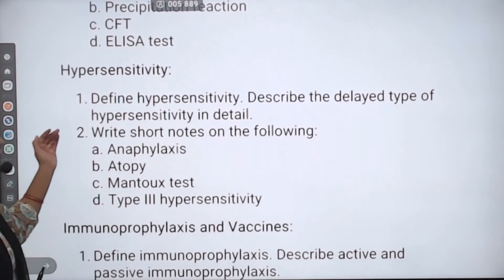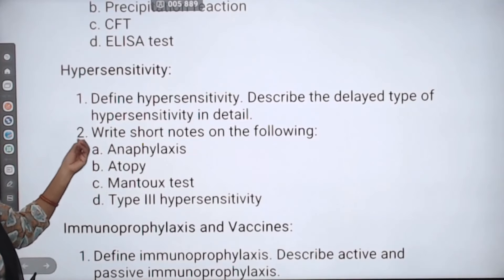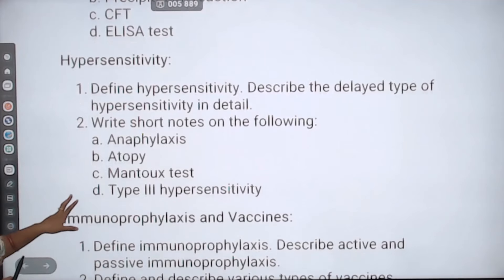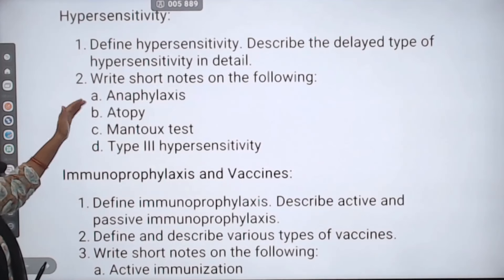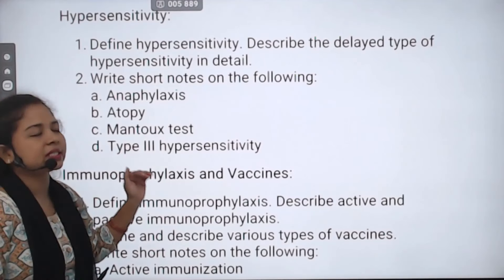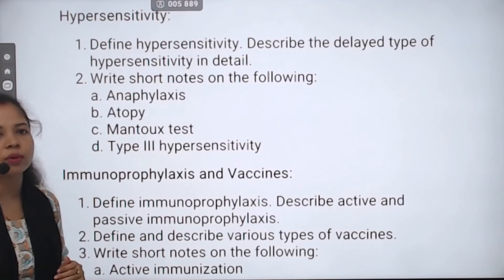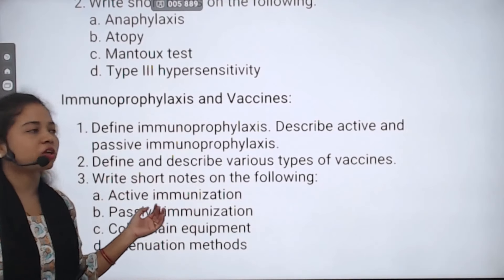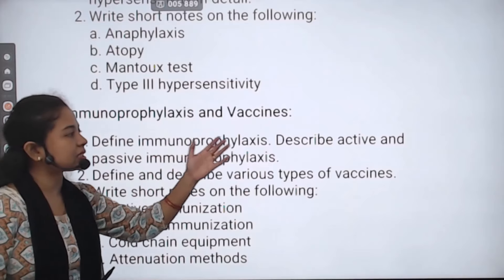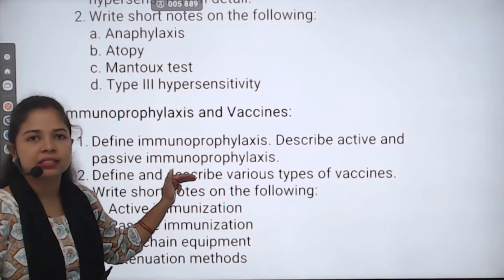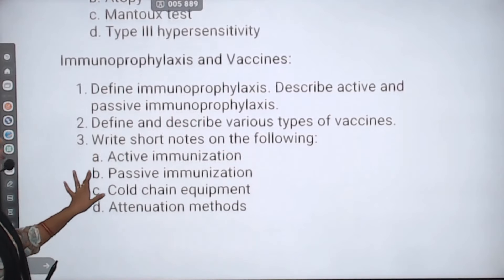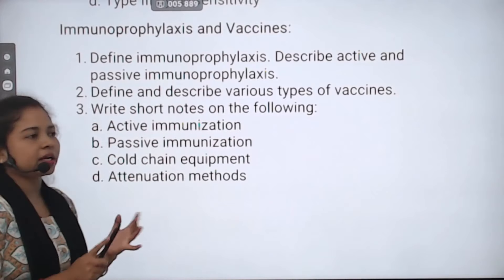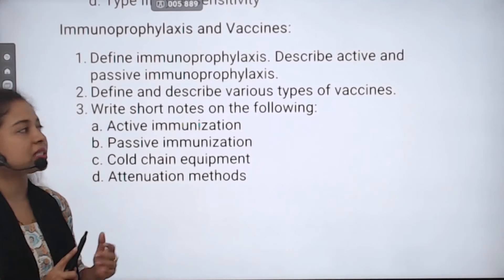Next topic: Hypersensitivity — describe its types in detail. Then, Immunoprophylaxis — describe active and passive immunoprophylaxis. Next question: Define and describe various types of vaccines — you will have to define and describe the various types of vaccines.